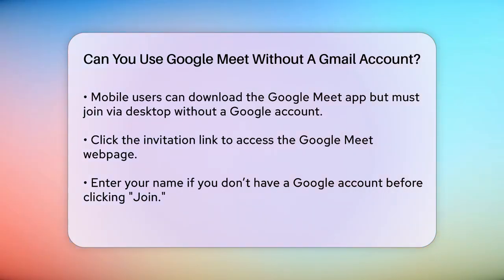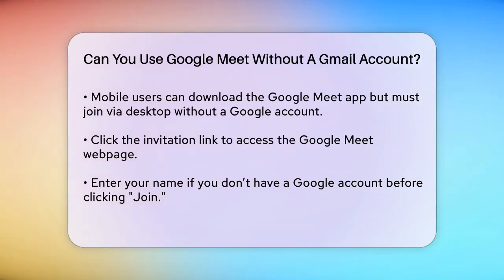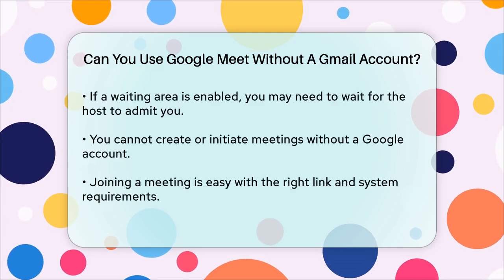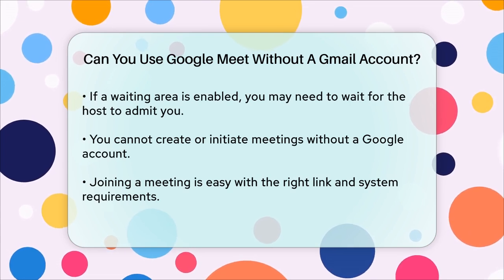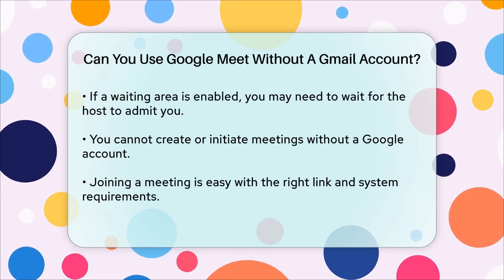To join the meeting, simply click on the invitation link provided by the host. This will take you to the Google Meet webpage where you can enter your name if you don't have a Google account. Then click the Join button. If the meeting has a waiting area enabled, you might need to wait for the host to let you in. Note that while you can join meetings without a Gmail account, you cannot initiate or create meetings yourself — this feature is only available to users with a Google account.